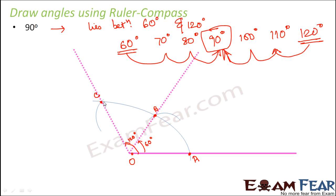Now how about 90 degree? So 90 degree has to lie somewhere between 60 and 120. In fact, it has to lie exactly between 60 and 120.